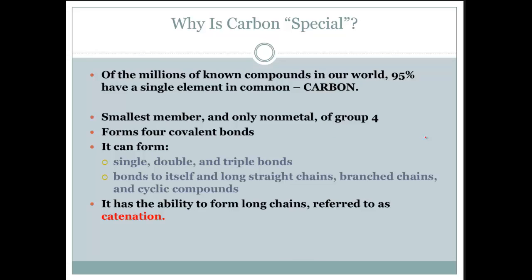Of the millions of known compounds in our world, 95% have the same element in common: carbon. It's the smallest member and only non-metal member of group 4. It forms four covalent bonds, and it can form single, double, and triple bonds. It bonds to itself in long straight chains, branched chains, or cyclical compounds. It's a very diverse atom.